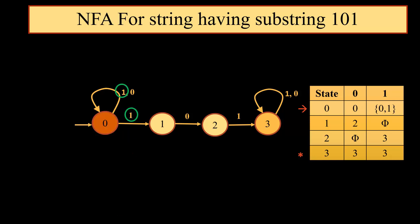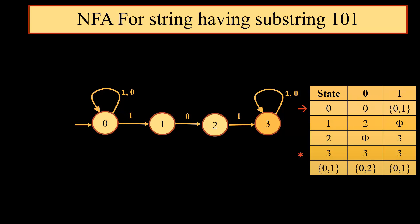If we consider state number 0, corresponding to input 1 we have two moves — one is on 0 and another is on 1. So we have a new state {0, 1} generated from state 0. Except state 0, all other states don't have any new state. So we will add this new state {0, 1} to the table.